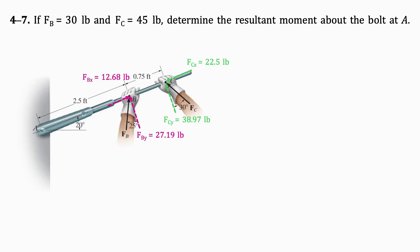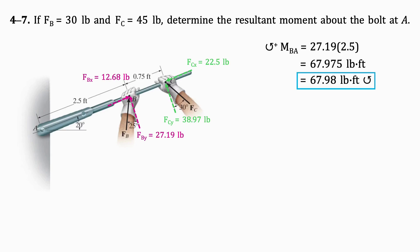To find the moment of FB about A, we will only consider its Y component, since the line of action of the X component passes through point A and therefore will not generate a moment. Multiplying the Y component of the force by its distance from A, which is 2.5 feet, we get 67.98 pound-feet in the counterclockwise direction.